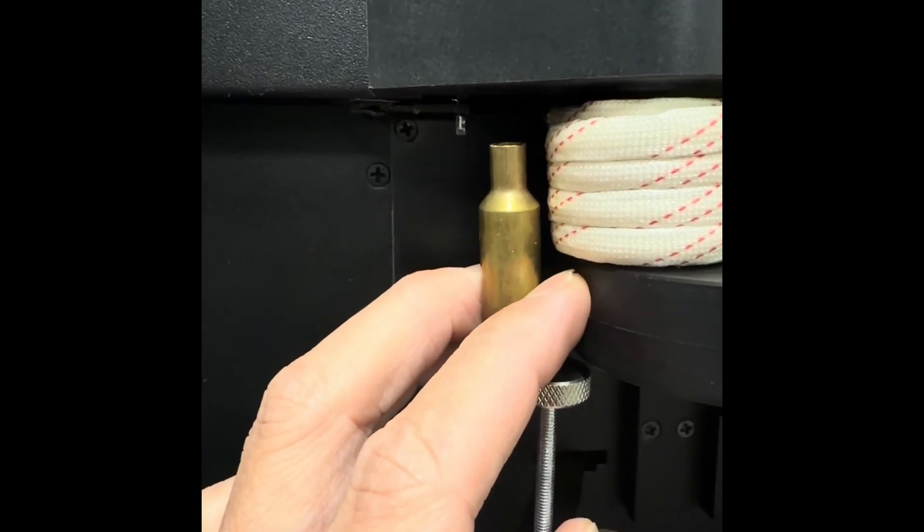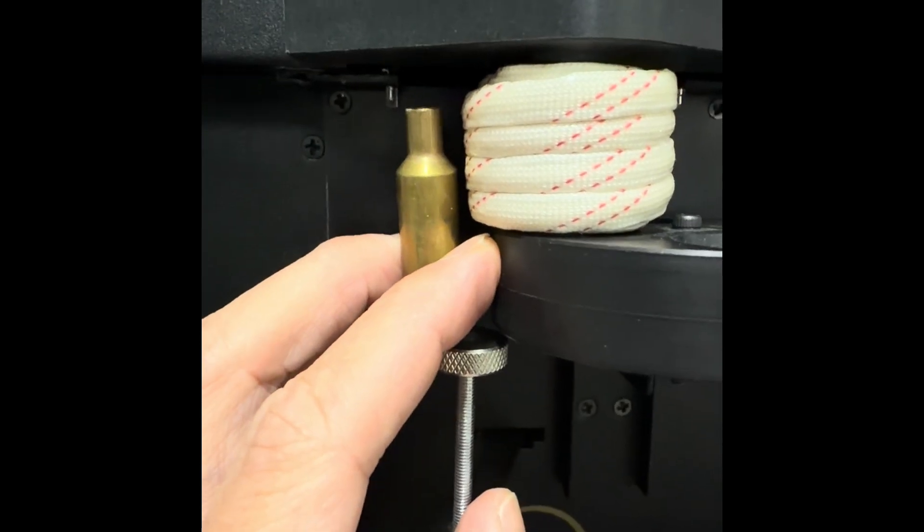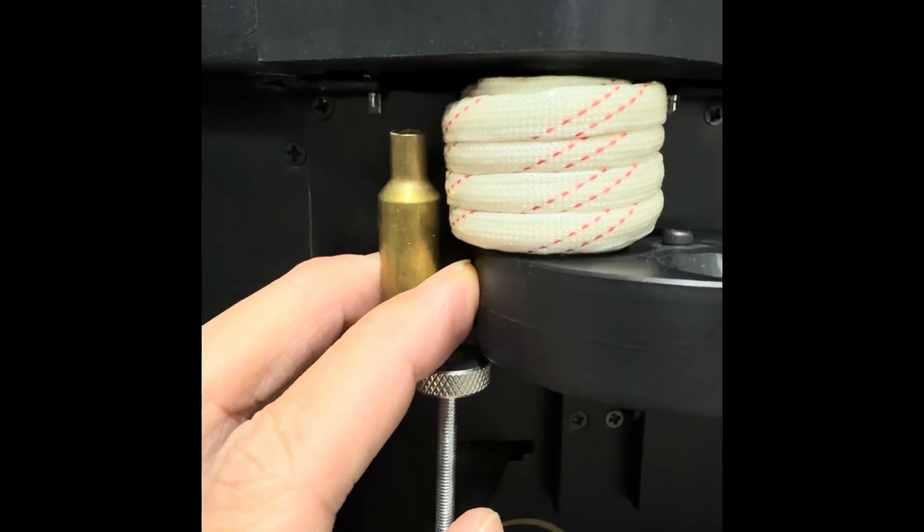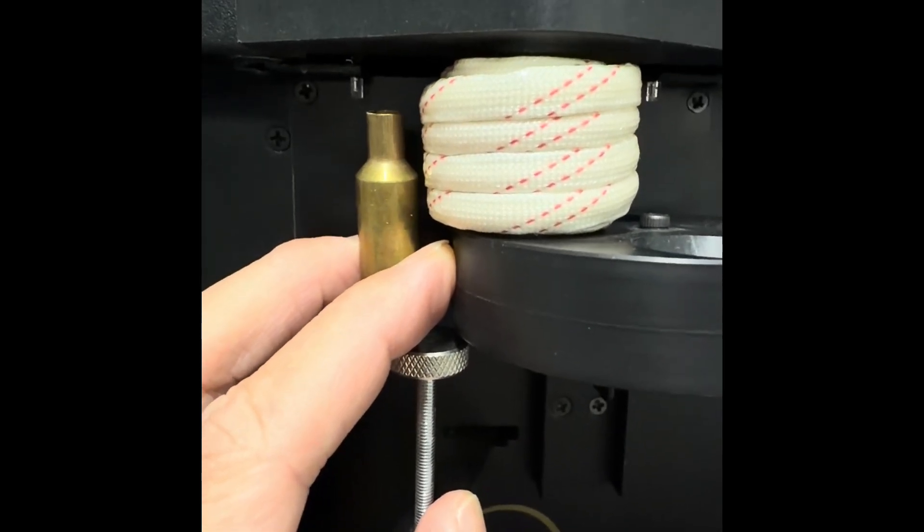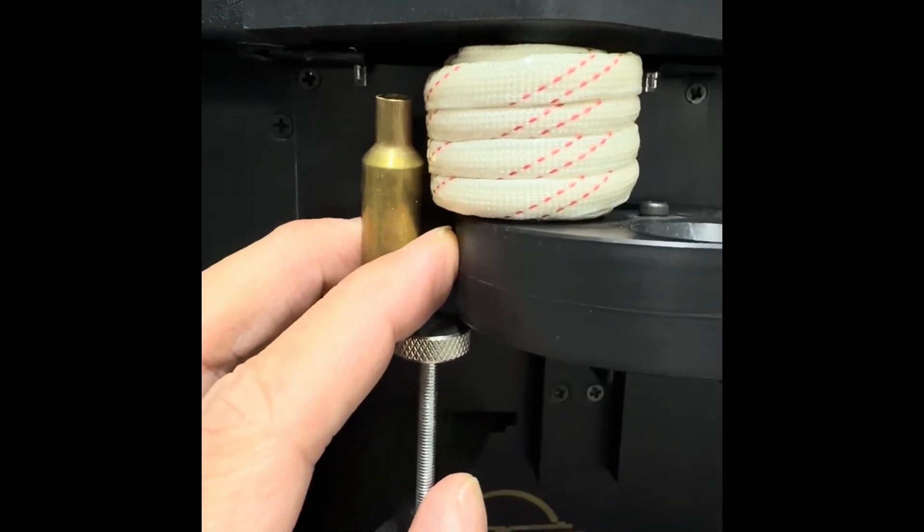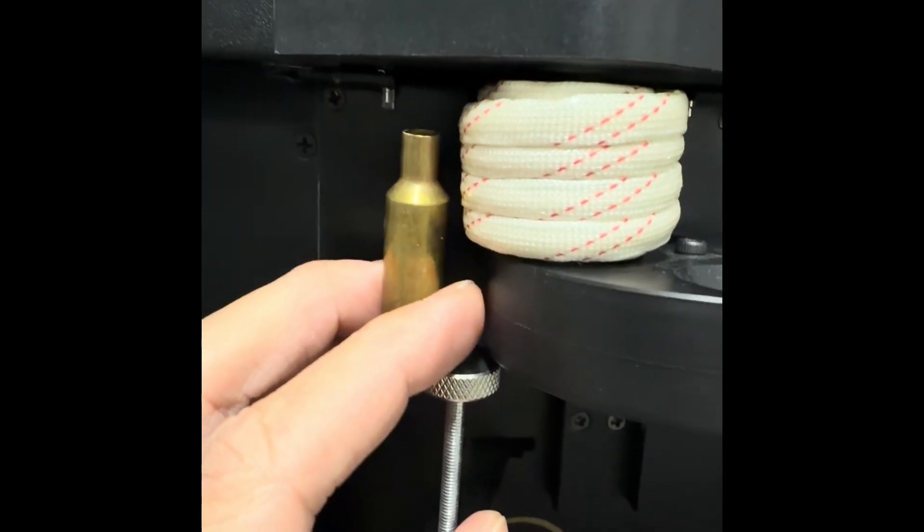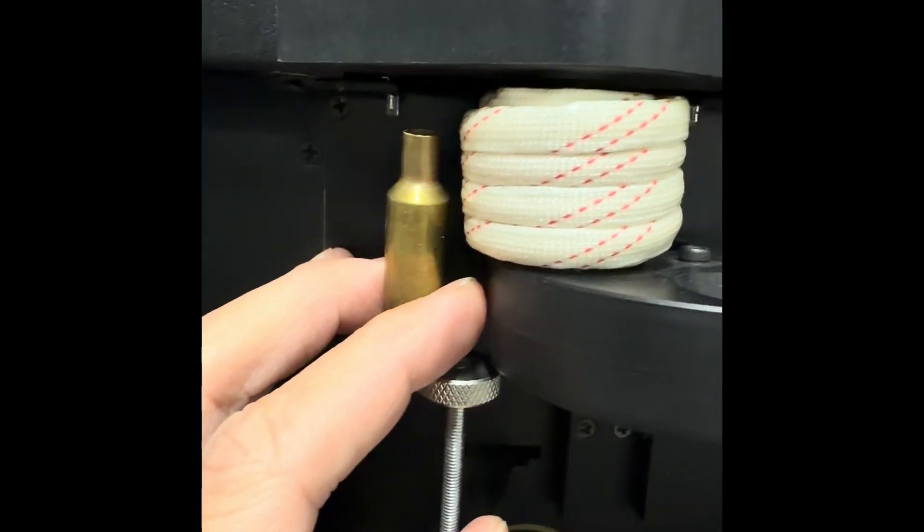And so you would just use your judgment with the heat zone being in the first three coils. For this case, this is likely where I would position it, somewhere around here. But just making sure it's above the second coil. It's above the first coil because that's where the heat zone is. If you put it below, then your shoulder is likely not going to get a proper anneal.